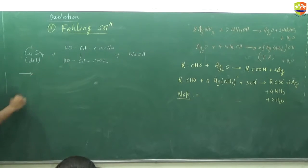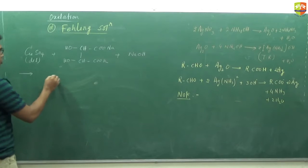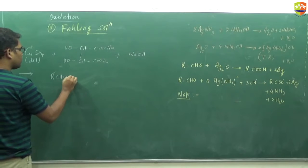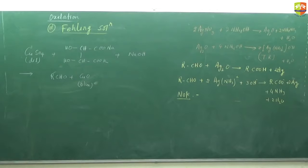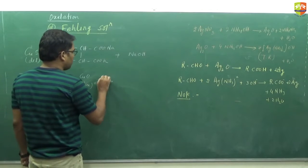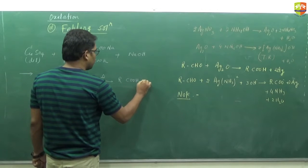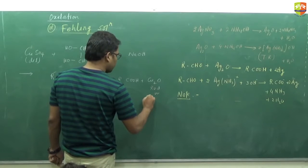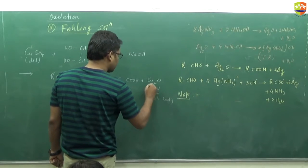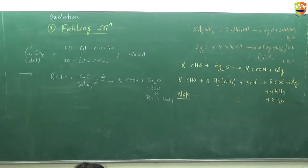When aldehyde is added to Fehling solution, the cupric ion - I'll write the reaction - RCHO plus CuO which is blue in color, it oxidizes to acid and forms RCOOH plus Cu2O which is red or brick red. Color changes from blue to red or brick red. Cupric to cuprous. So color change you must keep in mind.